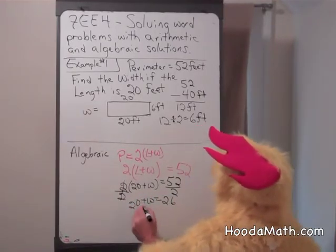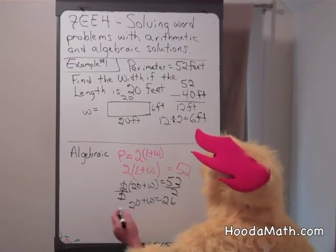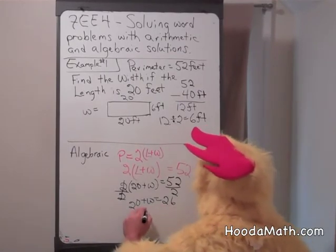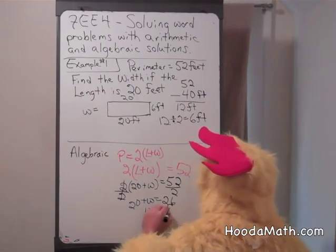So what do you have to add to W to make 26? We subtract 20 from both sides, and W equals 6 feet.